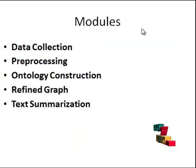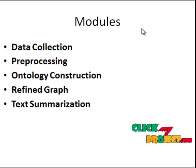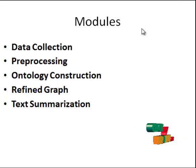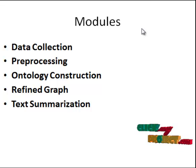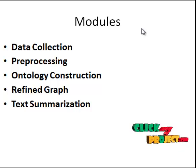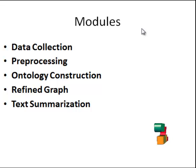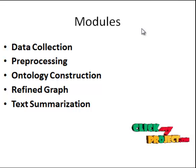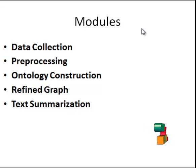There is a list of modules in this process. First of all, data collection — in this module, the initial document corpus is selected. The second module is preprocessing — in this module, we have performed the removing of stop words and the stemming process.